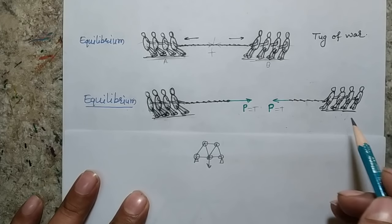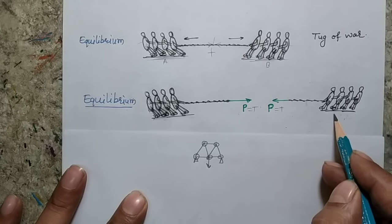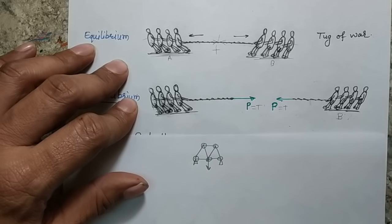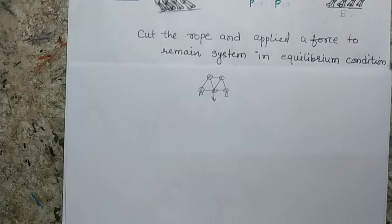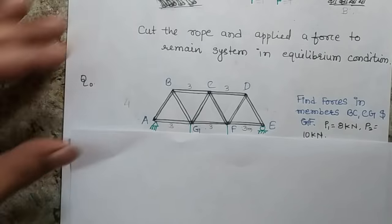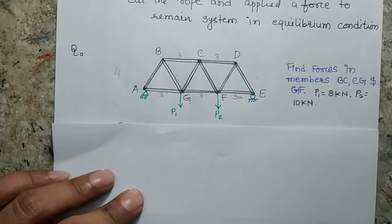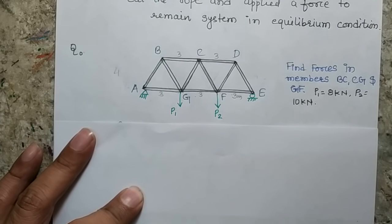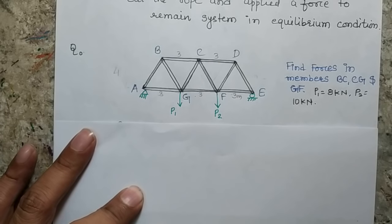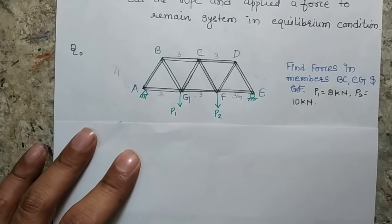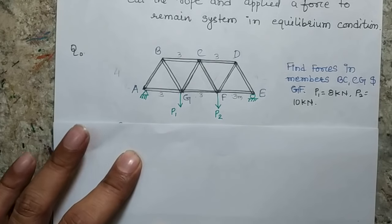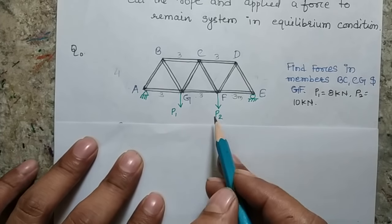The equilibrium of team B will also not be disturbed and it will also remain in equilibrium. The same philosophy we apply in the case of the method of section. We cut the truss at any section, and whenever we cut a particular member, it has to be replaced with an equivalent force. Those forces become our unknowns, calculated by applying the equations of force balance as well as moment balance.